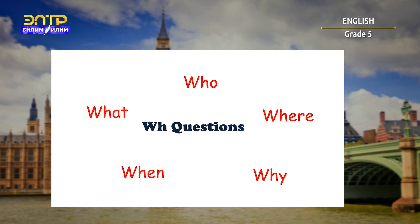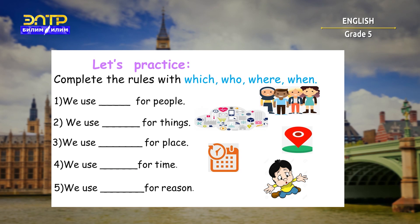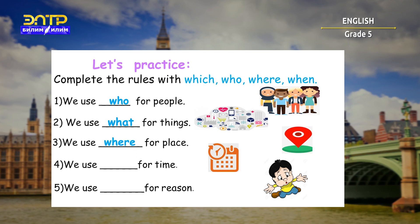Who, what, where, when, why. Now let's review. First W is 'who' — for people. The second W is 'what' — for things. The third W is 'where' — for place. The fourth W is 'when' — for time. The last one is 'why' — we use for reason.